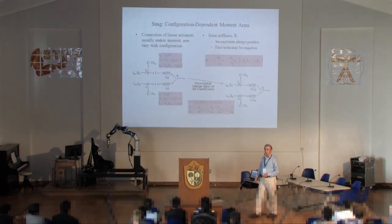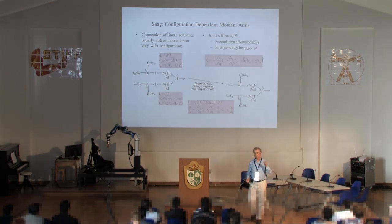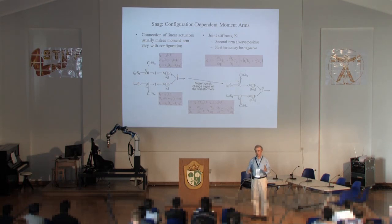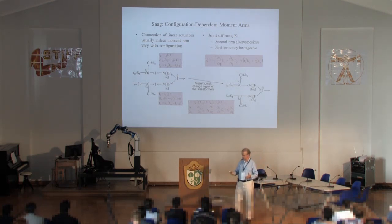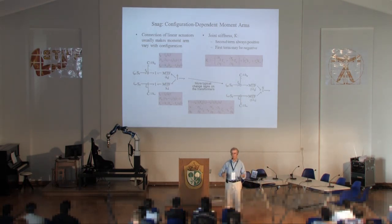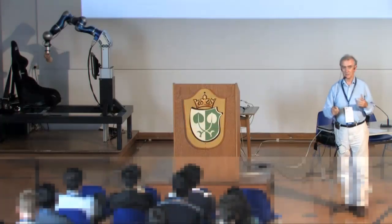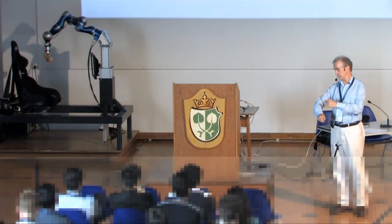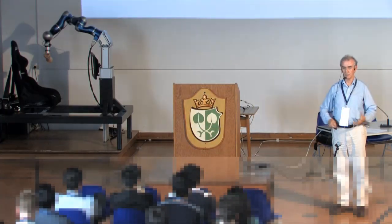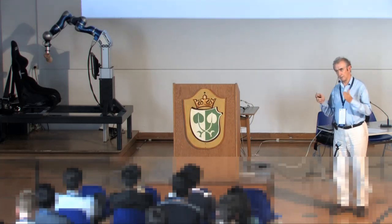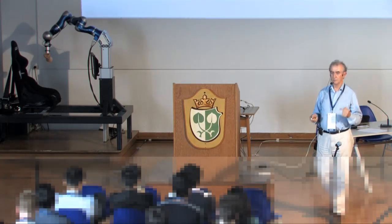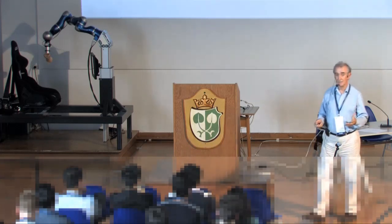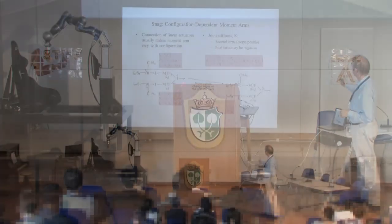The problem is that previous statement is only true if you have constant moment arms. It's a characteristic of the kinds of mechanisms that we have — we are endoskeletons, with bones on the inside and muscles on the outside. Because of that, in general the moment arm that the muscle makes about the joint depends upon configuration. If you have a variable configuration, it will contribute a term to the effective stiffness, and that effective stiffness can be negative.